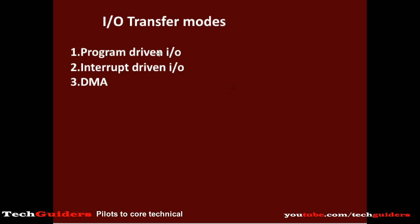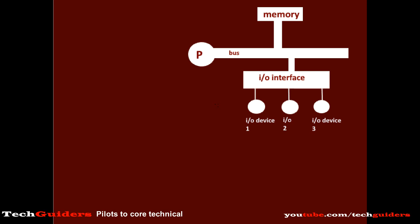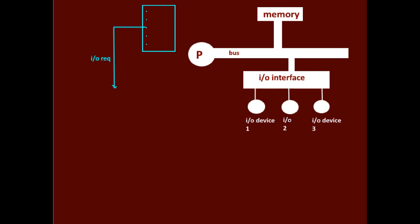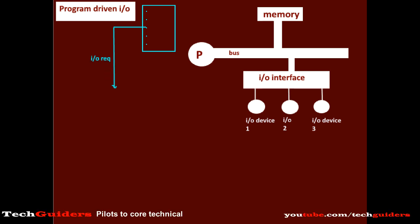First, we shall discuss the program-driven I/O. Suppose the processor is in the midst of execution of a program and it encountered an I/O request. In program-driven I/O, the processor takes the complete responsibility of this I/O operation, or the processor completely controls this I/O operation by executing a program.